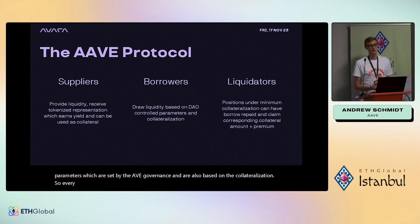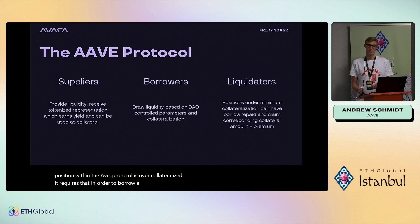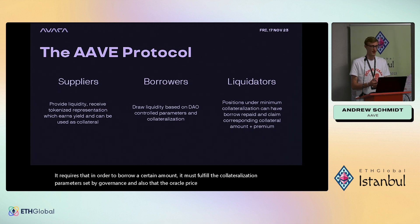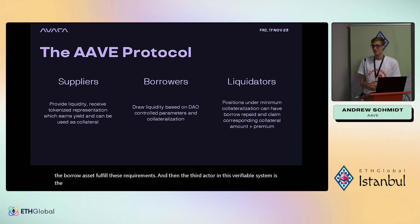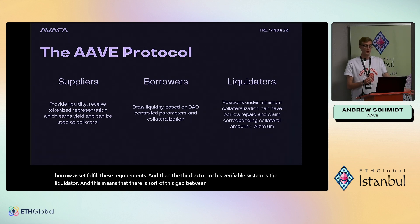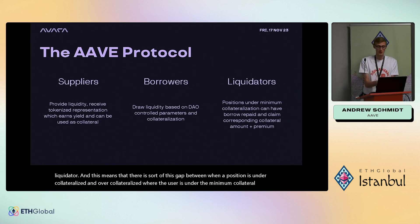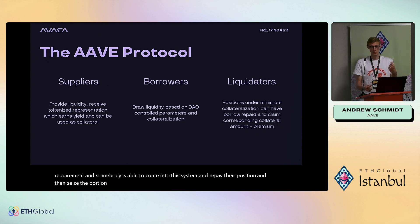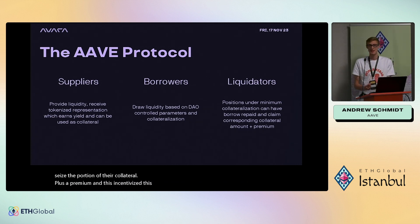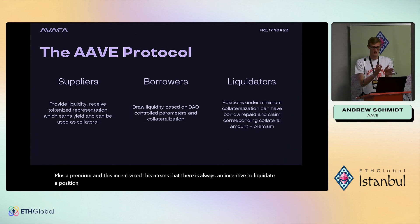Every position within the Aave protocol is over-collateralized — it requires that in order to borrow a certain amount, it must fulfill the collateralization parameters set by governance, and that the oracle price for both the supply asset and the borrow asset fulfill these requirements. The third actor is the liquidator. There's a gap between when a position is under-collateralized and over-collateralized where someone can come in, repay the position, and seize a portion of the collateral plus a premium — creating an always-present incentive to liquidate.